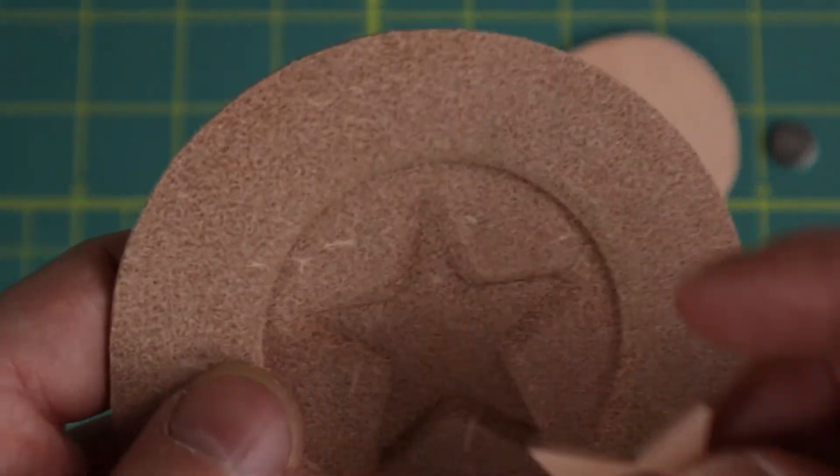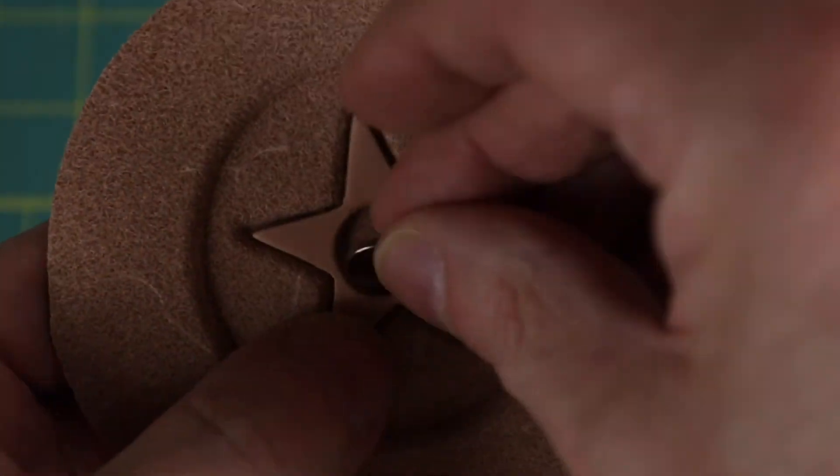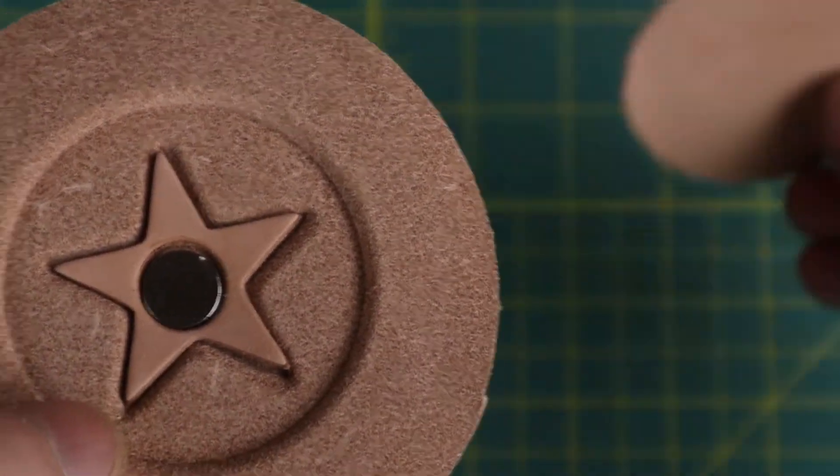When you cut out the leather for the raised lining, make sure the shape you create is large enough to have a half inch round earth magnet in the center and the pieces all fit together snugly.